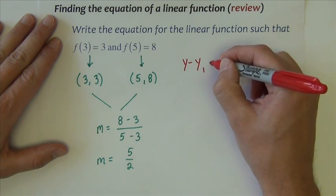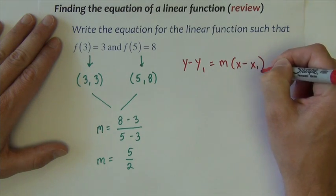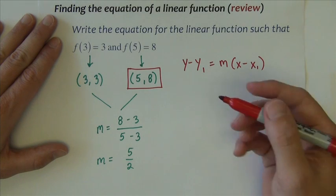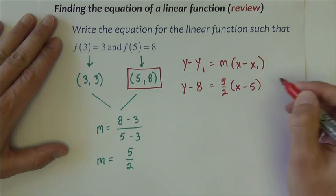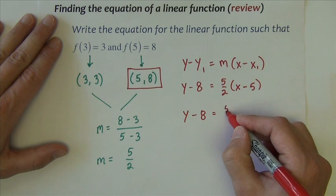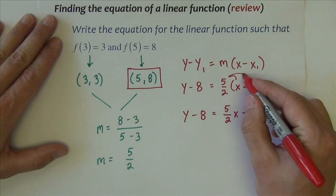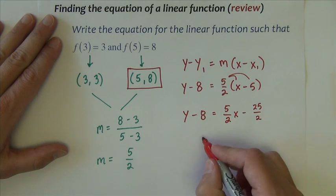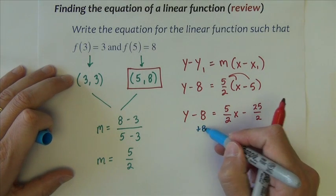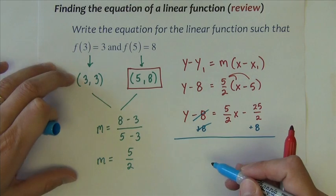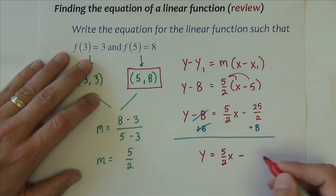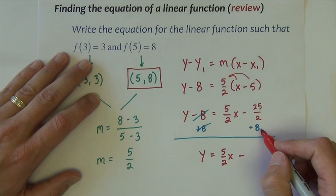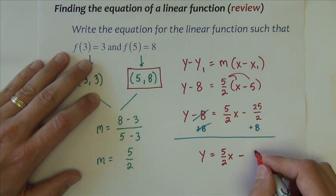Once we have the slope, we use one of the points and plug it into point-slope form. Using the point (5, 8): y minus 8 equals 5 halves times (x minus 5). Distributing the 5 halves gives 5 halves x minus 25 halves. Adding 8 to both sides — noting that 8 equals 16 halves — we get y equals 5 halves x minus 9 halves.